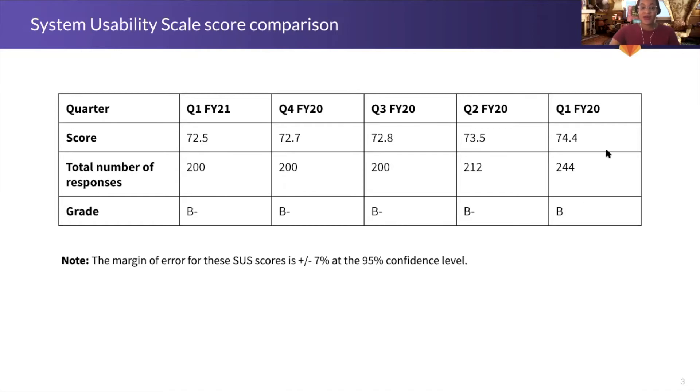A quick note about the margin of error. The margin of error highlights the challenges we face in recruiting enough participants for the survey. The larger the sample size, the smaller the margin of error will be, and the smaller the margin of error, the more confidence we can have that our results reflect the experience of GitLab's entire user base. We're working to iterate on the way we run the survey in order to reduce the margin of error over time.